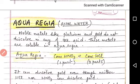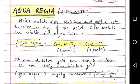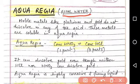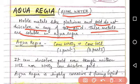Next topic is aqua regia. Aqua regia is also known as royal water. Now what is this royal water? Noble metals like platinum, gold do not dissolve in any of the acids, neither in HCl nor in H2SO4. These metals are soluble in aqua regia. Now what is aqua regia? The composition is one part of concentrated nitric acid and three parts of concentrated HCl or hydrochloric acid are mixed to form this aqua regia.